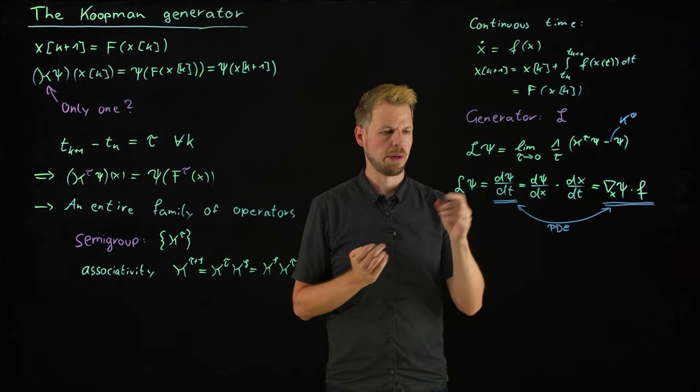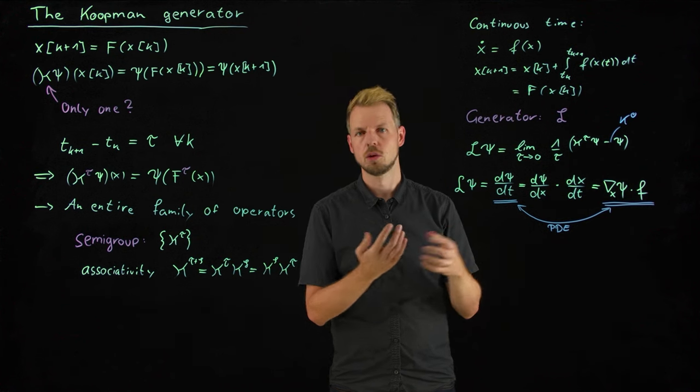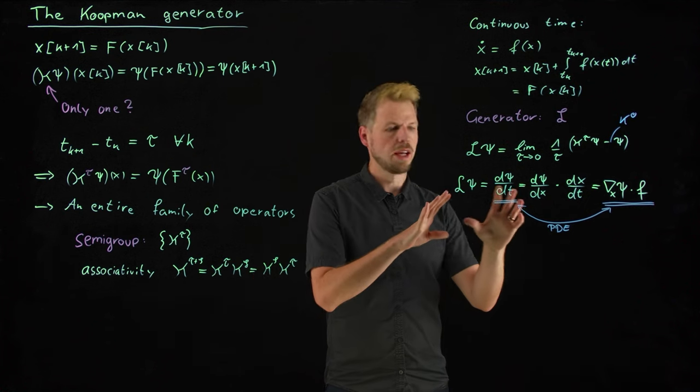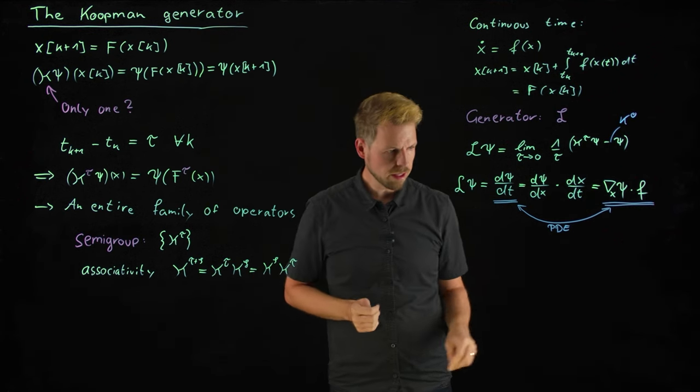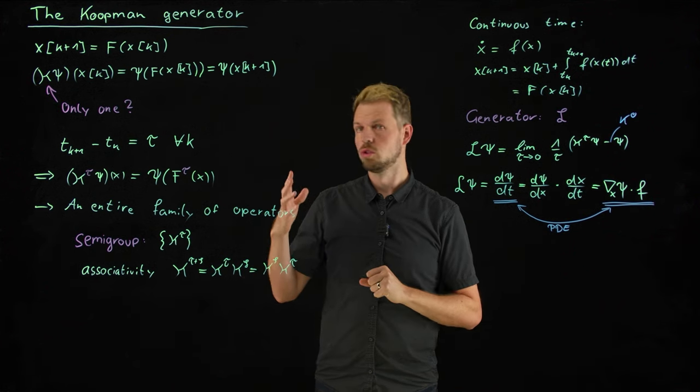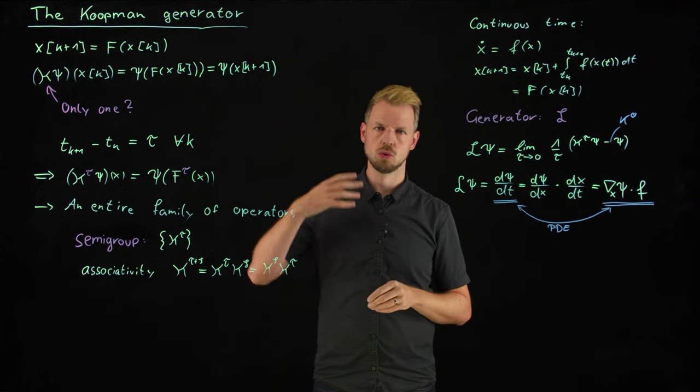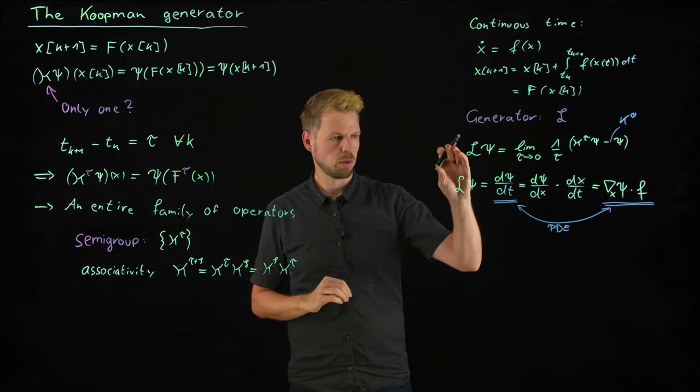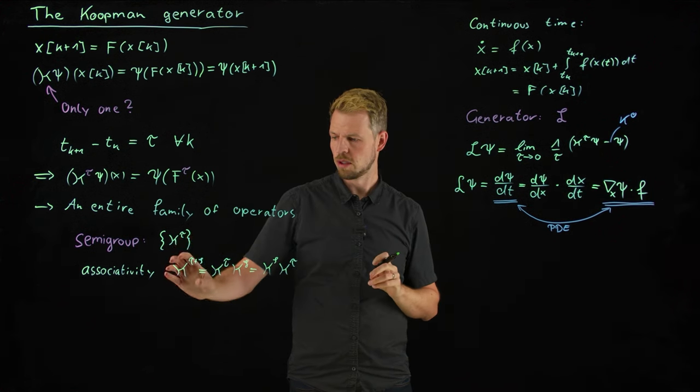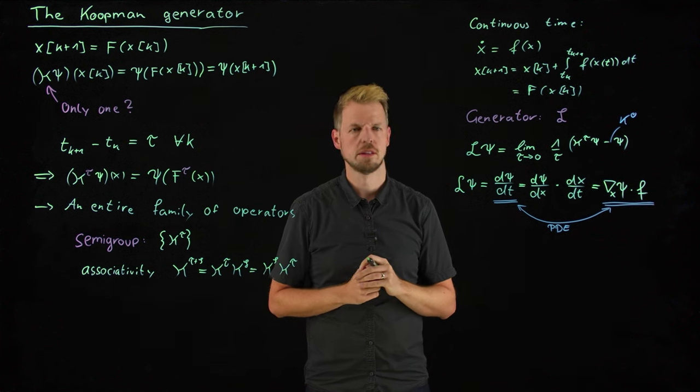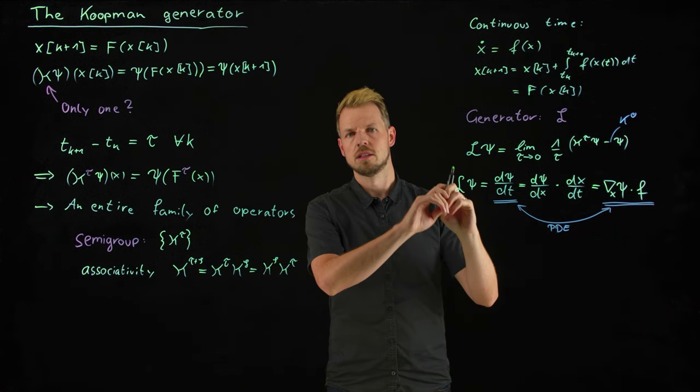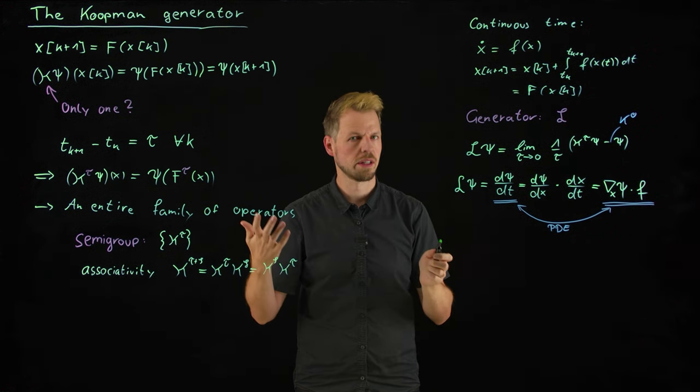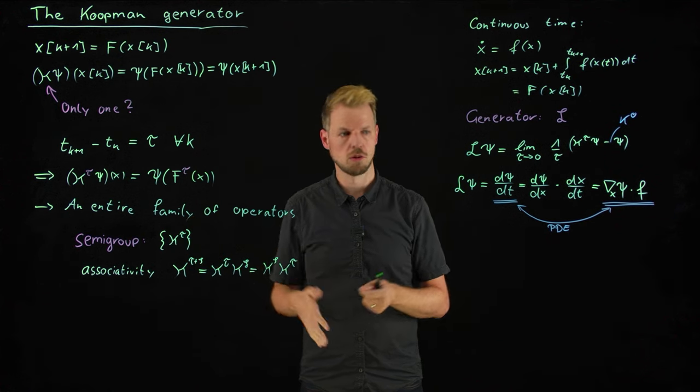Without going into more details here, if we consider stochastic dynamic systems, then one would get a second-order operator, a Laplace operator, and we get diffusion. But for now, this is what we have. So the Koopman generator, applying it to an observable function, equates to solving a partial differential equation of this type. And this has nice properties in some ways. So this is independent of a certain time step but possesses the same information.